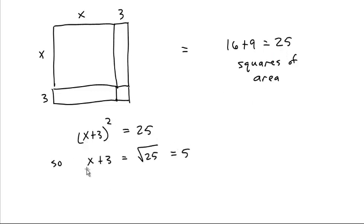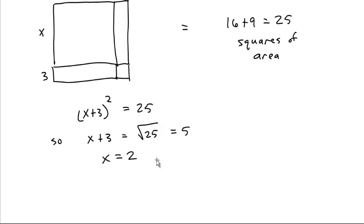Take the square roots of both sides. X plus three is the square root of 25, which is five. Some number plus three is five. Looks like that number is two. You subtract three from both sides. X is two.